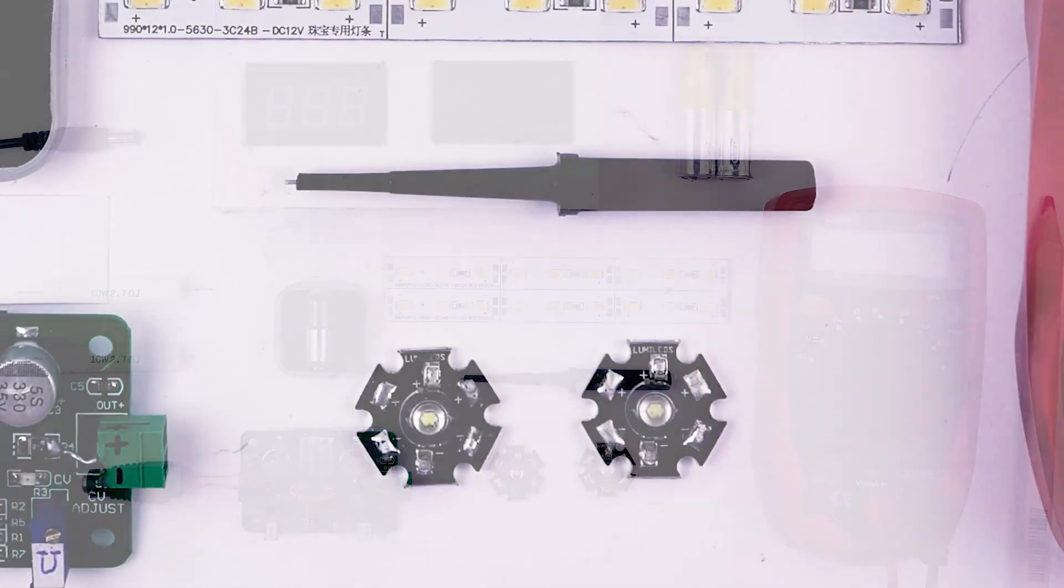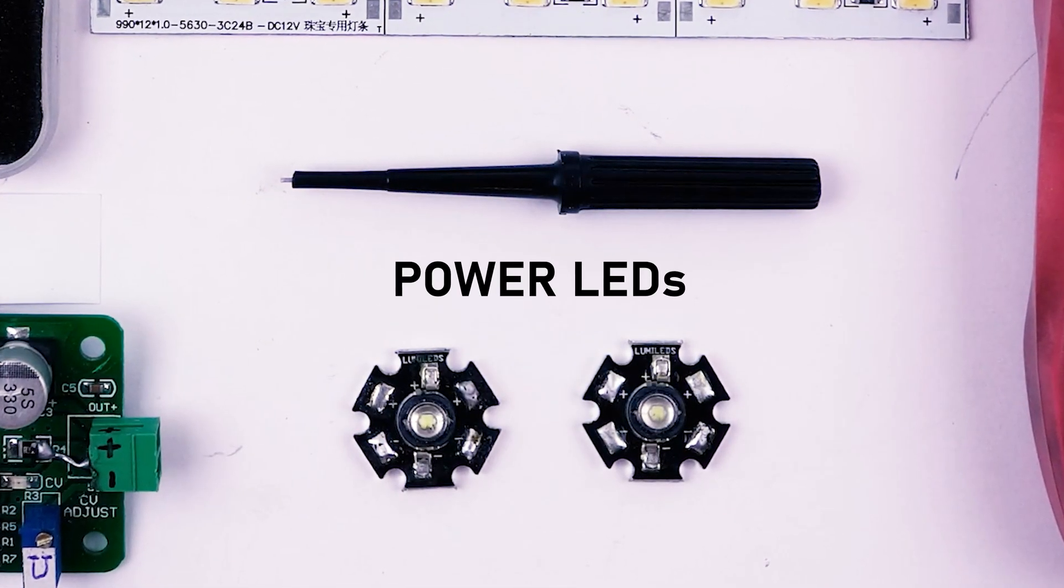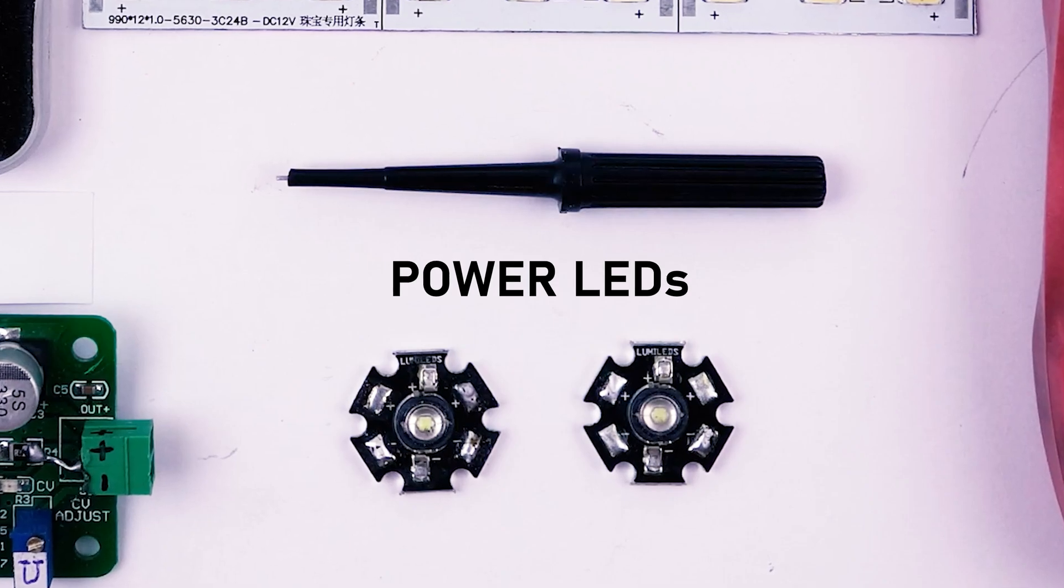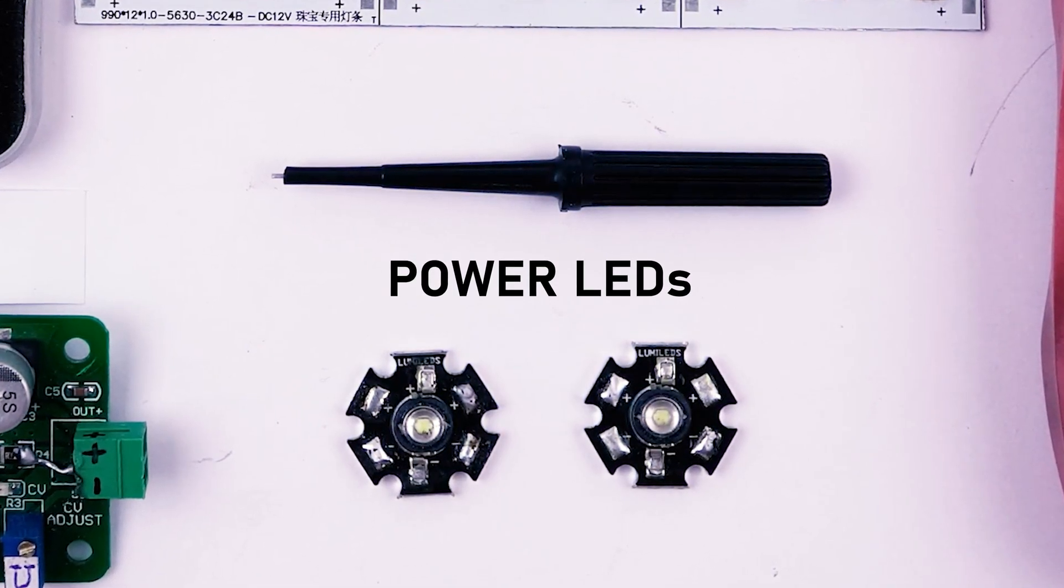I keep hearing the same question – how is it that LEDs are current-driven and not voltage-driven? Or why I can't connect an LED directly to a battery?